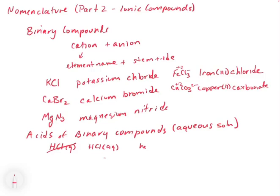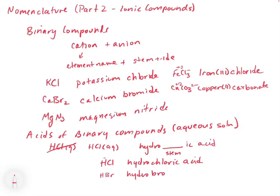The way that we name the ionic form is hydro, then we put in the stem, and then we put in ic acid. So it's hydro stem of the negative ion ic acid. So HCl would be hydrochloric acid. HBr would be hydrobromic acid.